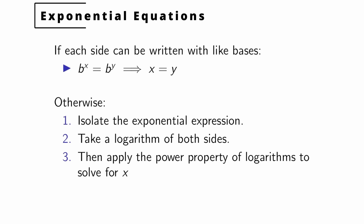There are two sorts of exponential equations we're going to look at. One where both sides of the equation can be written with the same base — you can rewrite both sides as B to some expression: B to the X equals B to the Y. If the base is the same and these two expressions are equal, that means the exponents have to be equal. So if you can write each side with the same base, you just set the exponents equal.